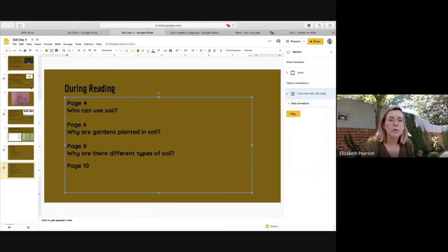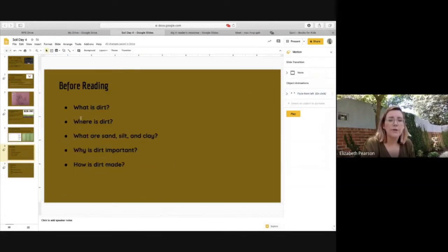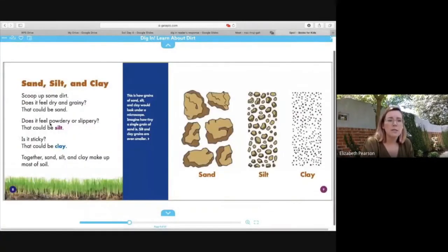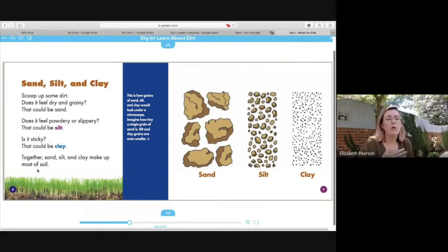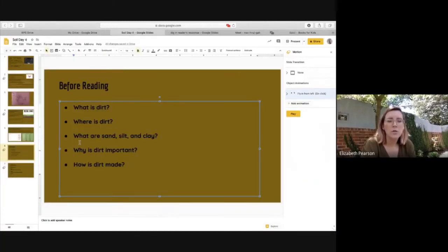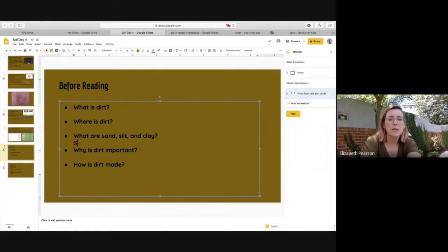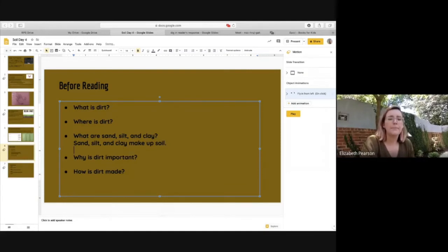All right, let's go back to some of the questions that I had before we were reading. Oh, here's one. What are sand, silt, and clay? So in the story, it says here that sand is dry and grainy, silt is powdery and slippery, and clay is sticky, but they are things that make up soil. So soil is not just one thing. Soil is made out of all three of those things. So I'm going to say on my graphic organizer, sand, silt, and clay make up soil.